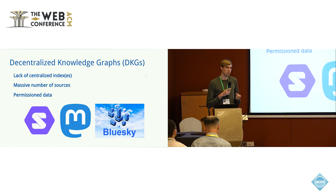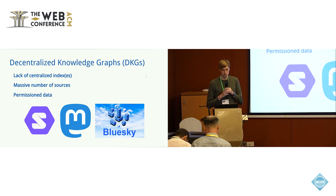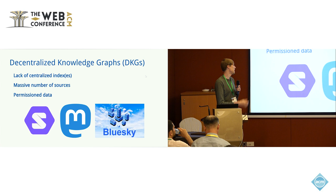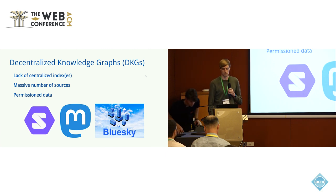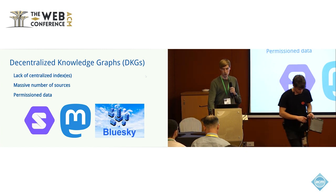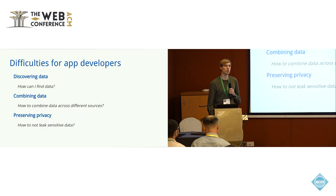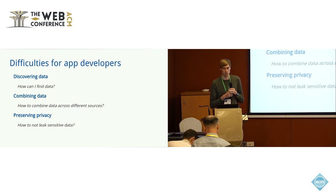Finally, there's also an element of permissioned data in there because of privacy. Obviously, there are a lot of advantages for end users for having these decentralized knowledge graphs because users are in control over their own data, can choose how to store it, where to store it, and so on. That's great for the end user. But on the other hand, it leads to some difficulties for developers that want to create applications on top of these decentralized knowledge graphs.